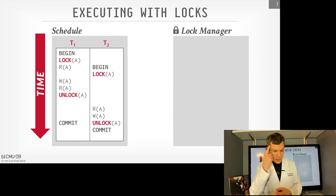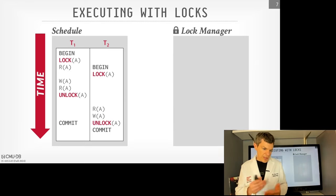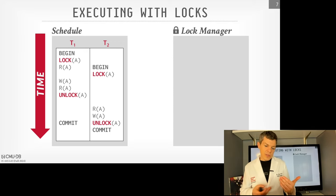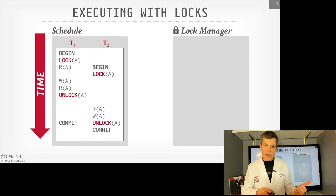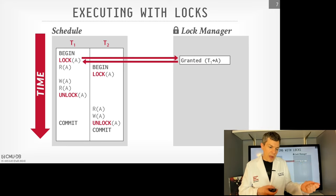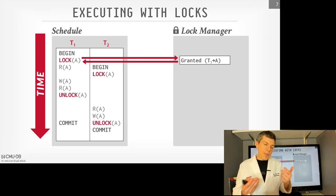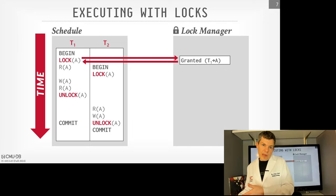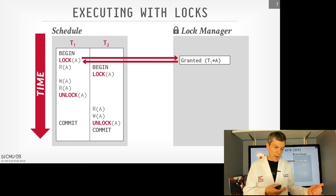Let's look at a simple example. T1 wants to read A, write A, read A. T2 wants to read A and then write A. Now we introduce explicit lock and unlock commands. T1 first requests the lock on A from the lock manager. Nobody holds it, so the lock is granted. T1 does the read on A. Then T2 starts and tries to request the lock on A — but T1 holds it, so the lock manager denies the request and puts T2 in the wait queue. T1 then does the write on A and the second read on A, then releases the lock. That wakes up T2, which gets the lock, does the read and write, and finishes.